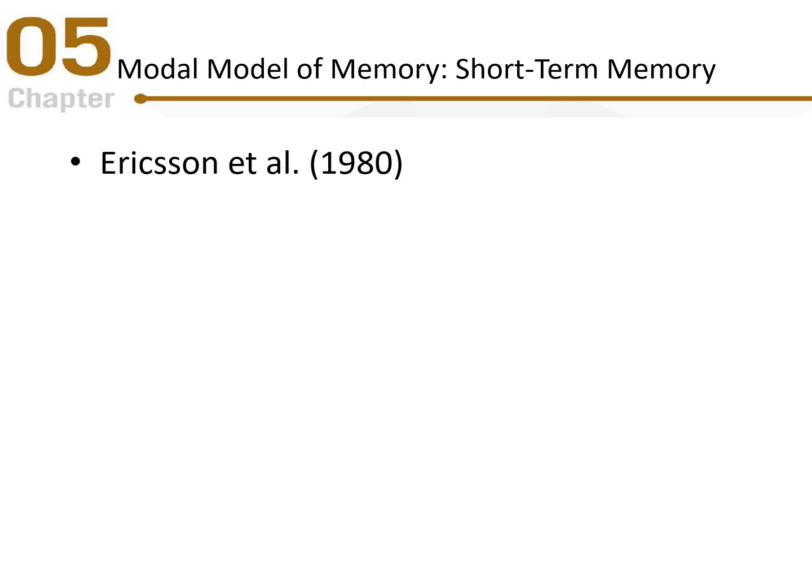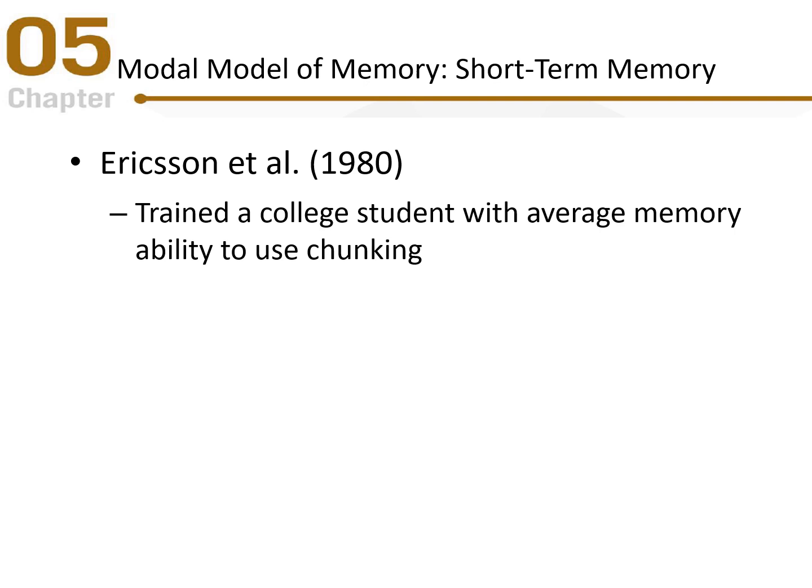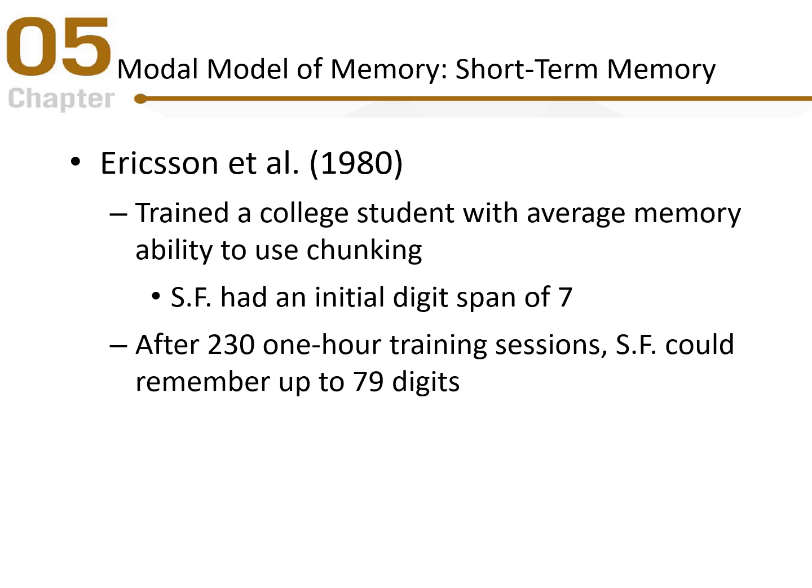A 1980 study trained a college student with average memory on how to chunk. The student's initial digit span was seven. After 231 one-hour training sessions, the student could remember up to 79 digits by chunking them into meaningful units. The key takeaway is that short-term memory span can be increased through extensive training and chunking like items together into larger singular chunks.